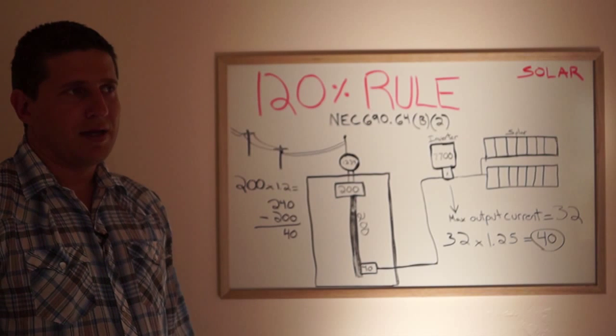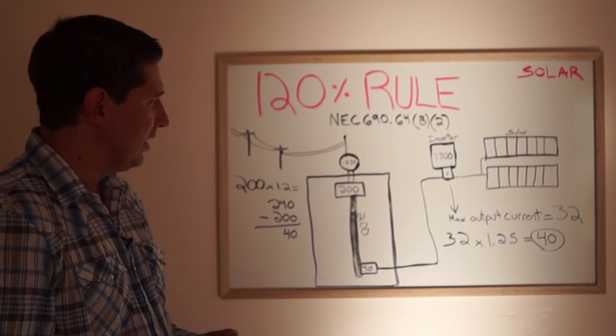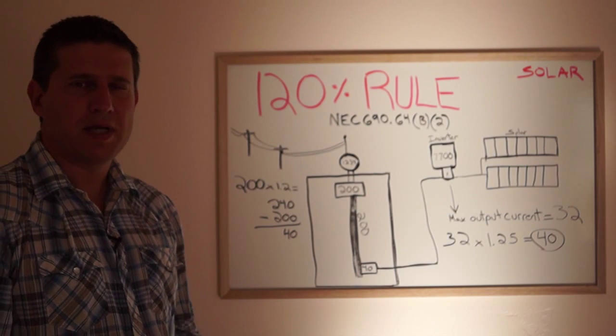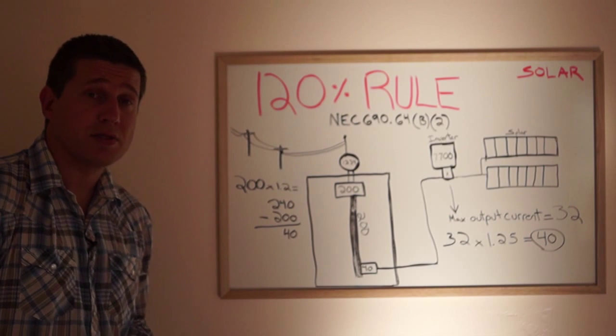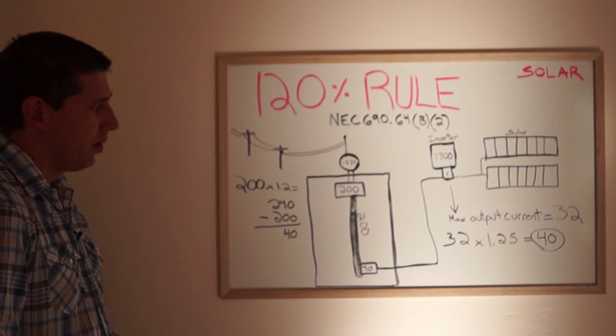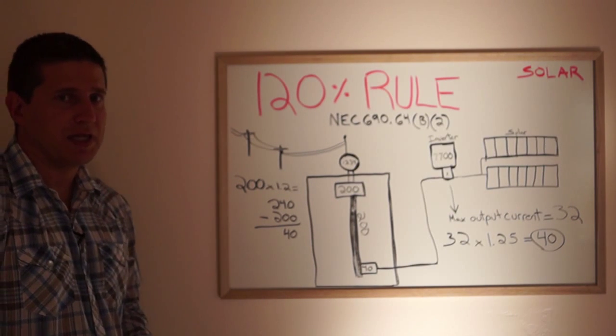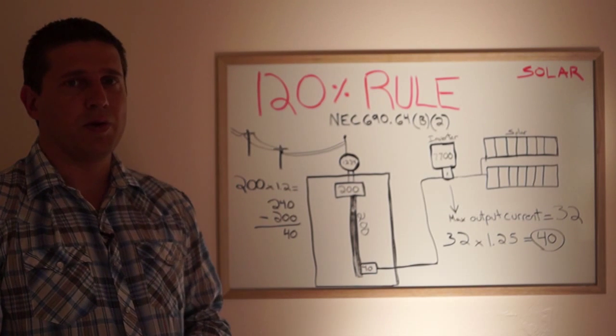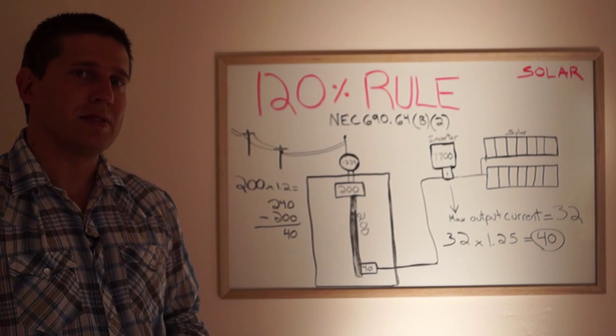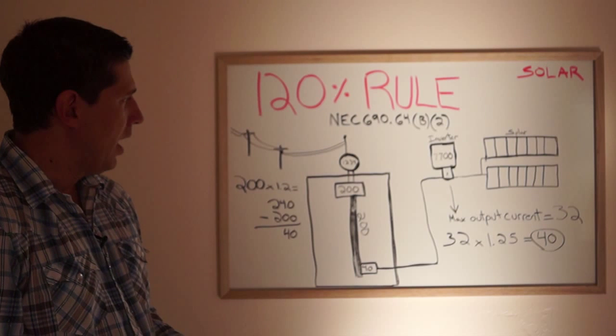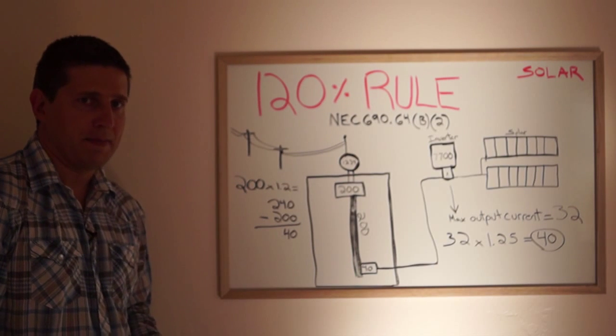So some might say well that's not true, I've seen larger systems out there, or there must be some other way. And there are. There's quite a few other ways to work with it. But this is the simplest explanation of how the 120% rule limits the system size of solar for a 200 amp main service panel.